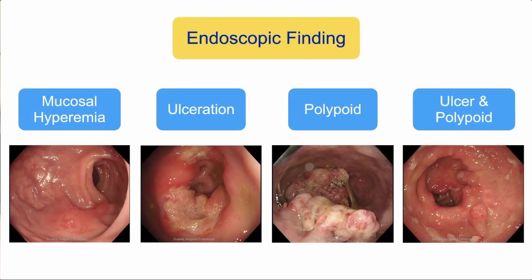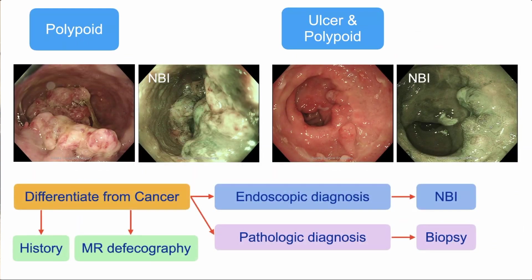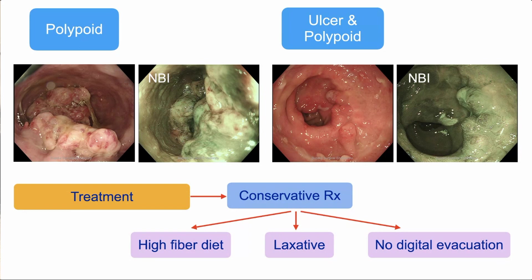For the other two findings — polypoid and the mixed type of ulcer and polypoid lesions — we do the same initially. We need to confirm the diagnosis first by endoscopic diagnosis using NBI, then confirm it by pathologic study, and also ask the patient about history, especially digital evacuation, and obtain a functional study by MR defecography. After the diagnosis is confirmed, conservative treatment remains the mainstay. But for lesions like these, we have additional treatment options.